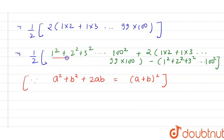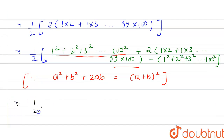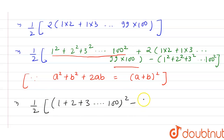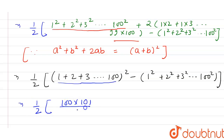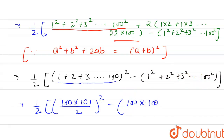Applying this property, we get one-half into (1 plus 2 plus 3 plus ... plus 100) whole squared minus (1 squared plus 2 squared plus 3 squared, up to 100 squared). This equals one-half into 5050 squared minus 100 into 101 into 201 upon 6.